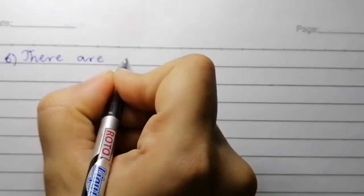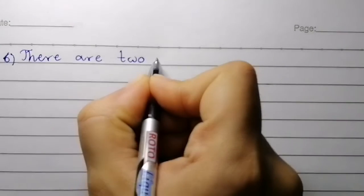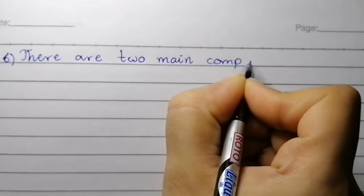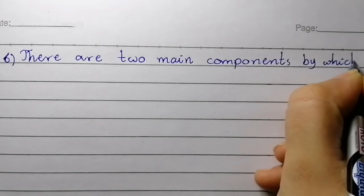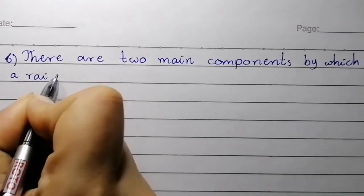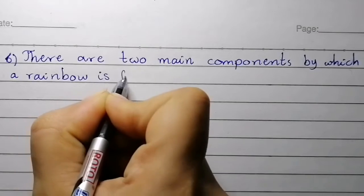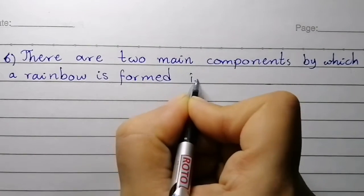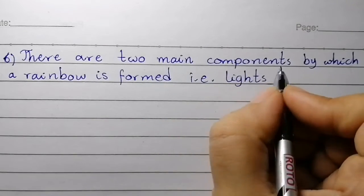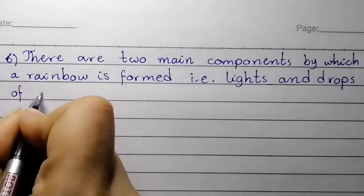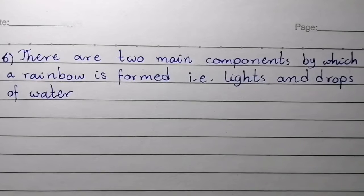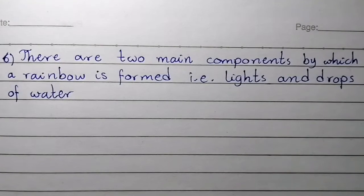Point number six: there are two main components by which a rainbow is formed — light and the drops of water.